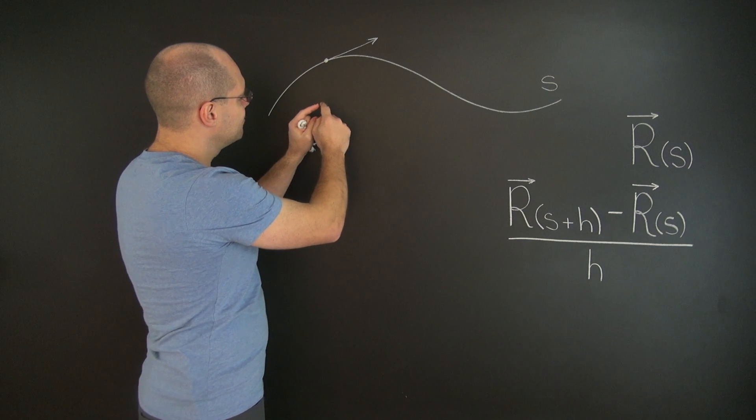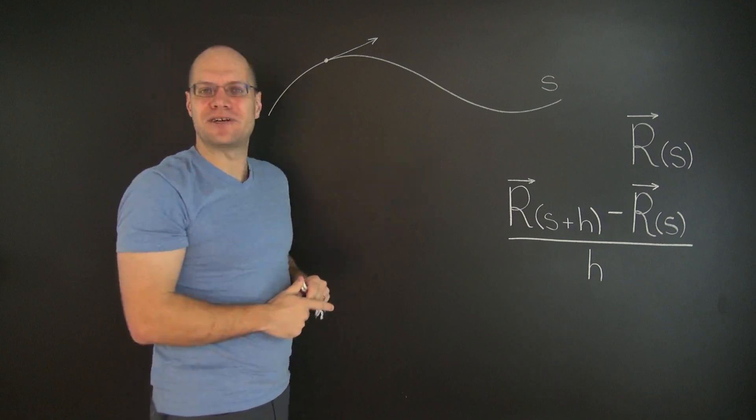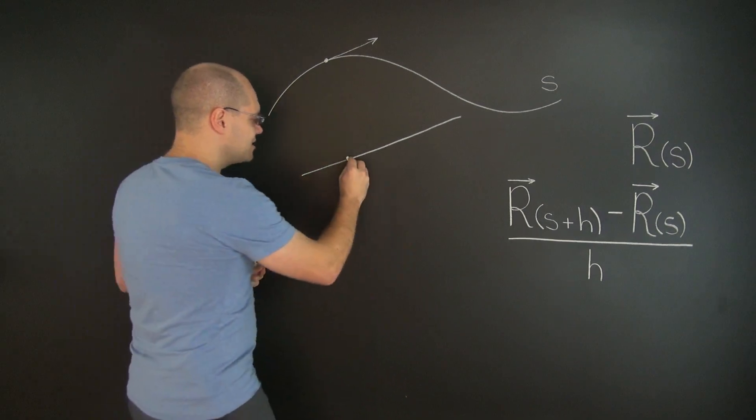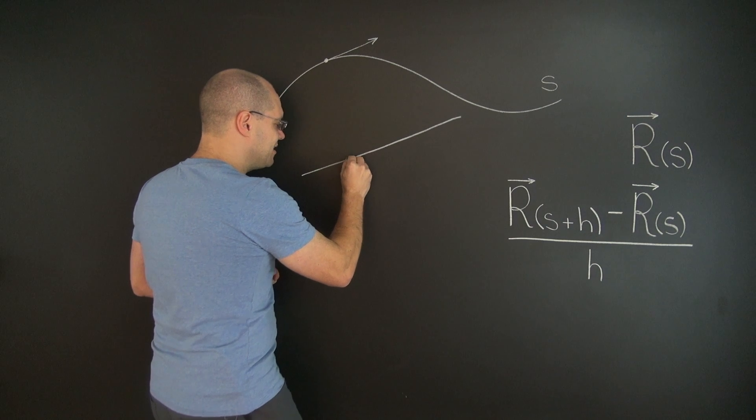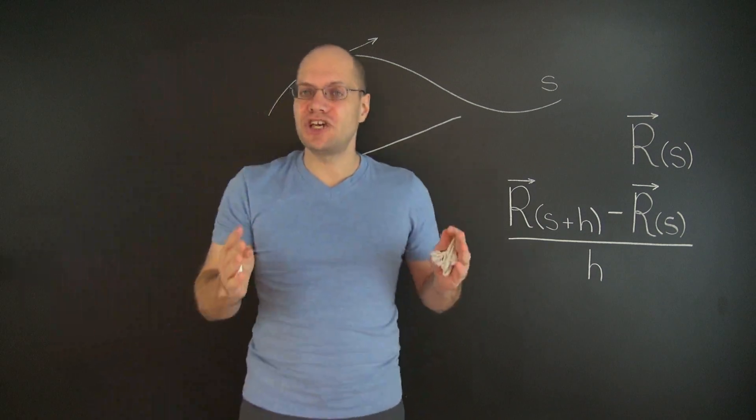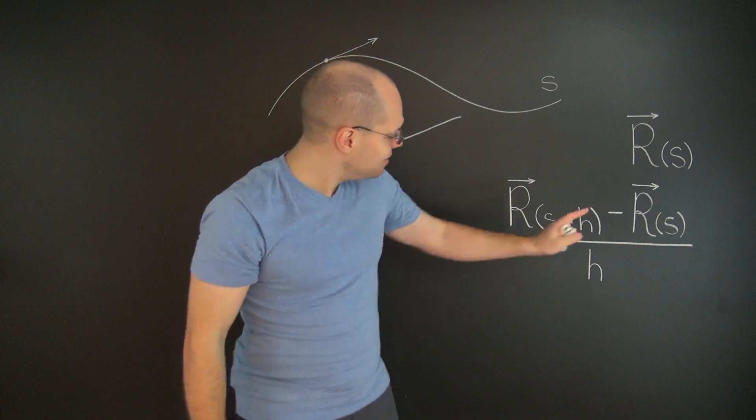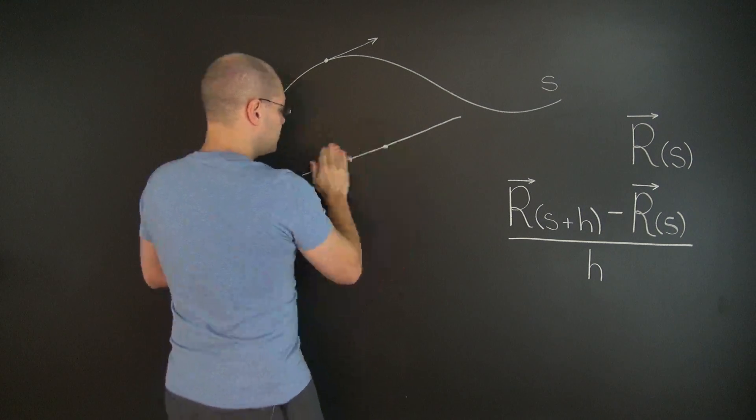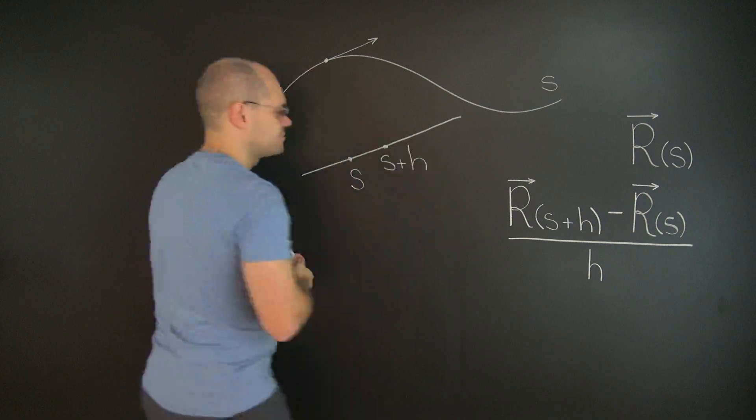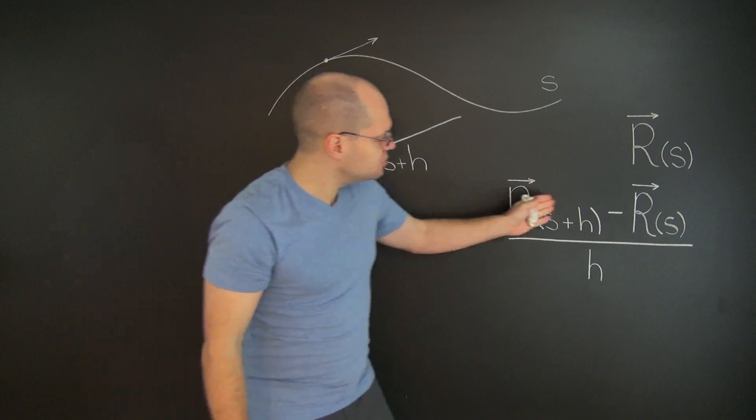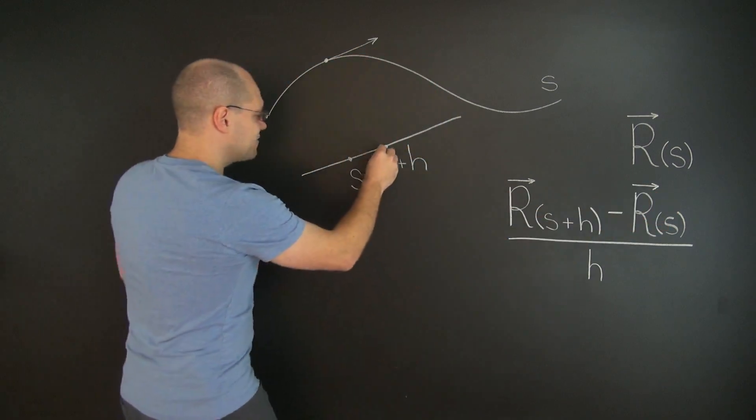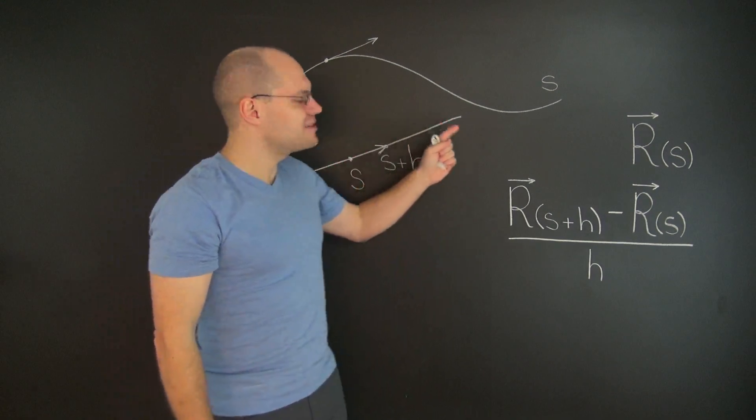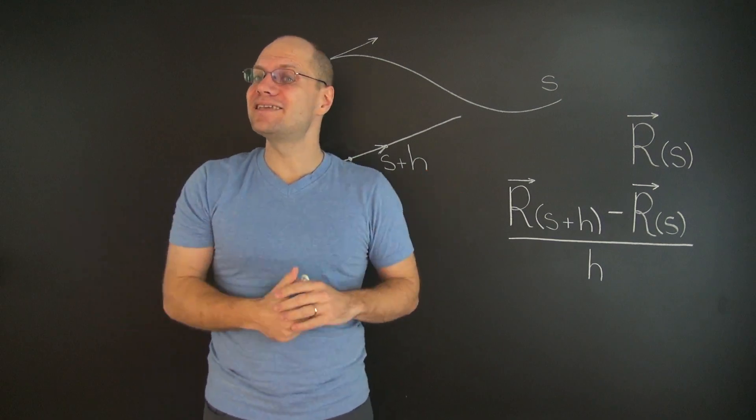There it is, perfectly straight. So now let's suppose that this right here is this point. And now let's change our parameter, which is arc length, by the amount h. Then the vector that corresponds to the numerator of this fraction is this vector right here. And of course this vector points along this straight line. But what is its length?